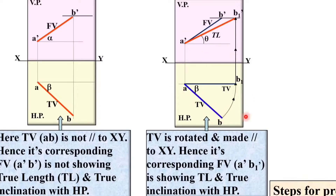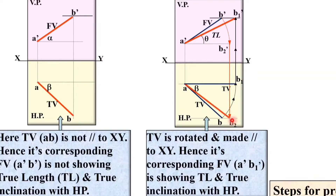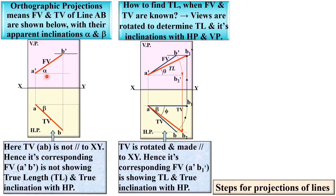You can also rotate the front view a'b'. Make it parallel to the XY line, then project it down to the path of b to get b2. Join a to b2 — that is your true length and its inclination with the horizontal line, denoted by phi. So theta and phi are both called true inclinations, whereas alpha and beta are called apparent inclinations.